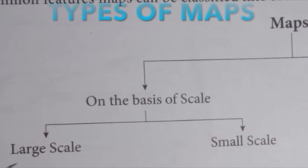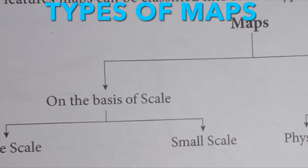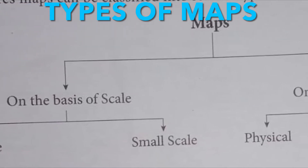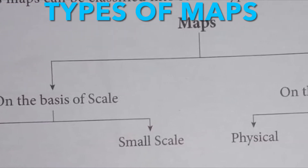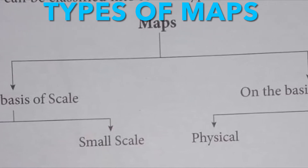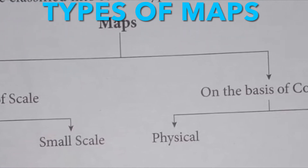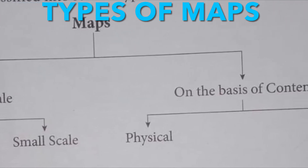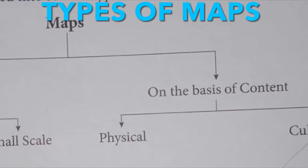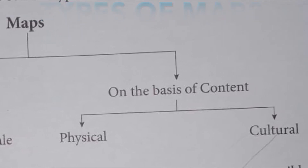Types of maps. On the basis of certain common features, maps can be classified into several types — on the basis of scale: large scale map and small scale map; and on the basis of content: physical map and cultural map.